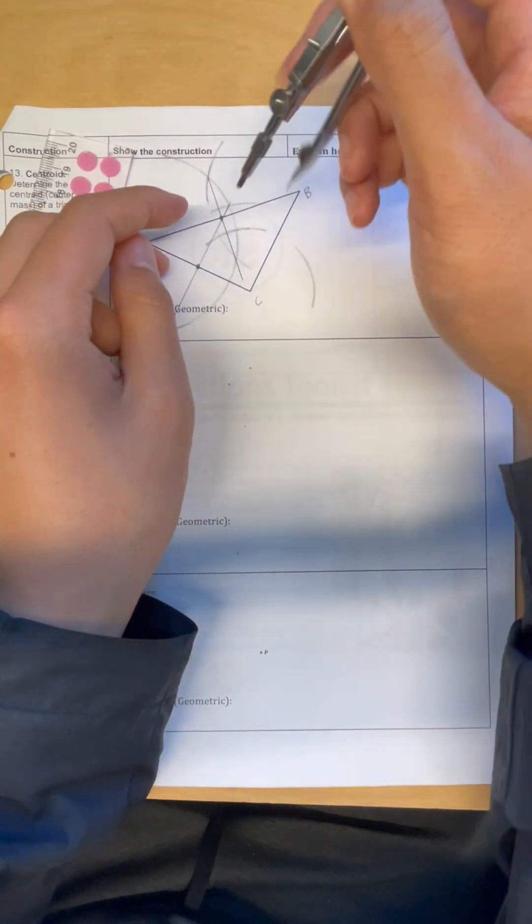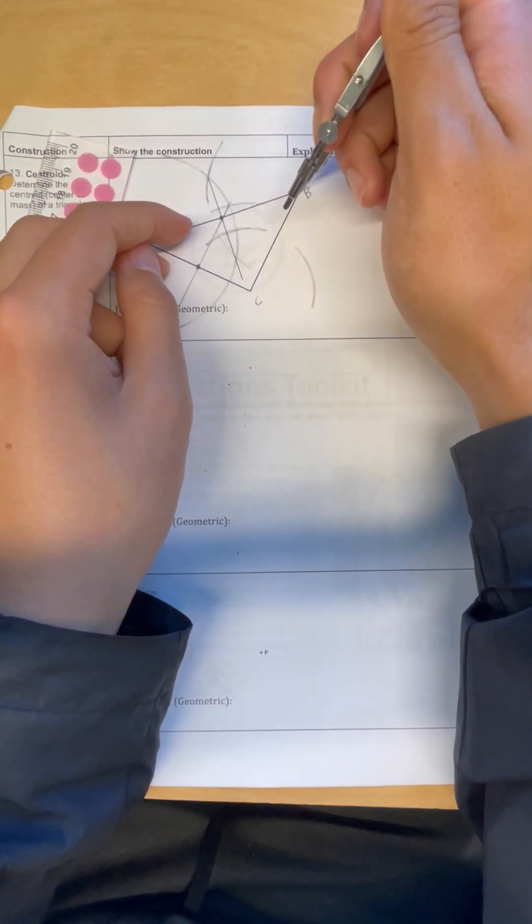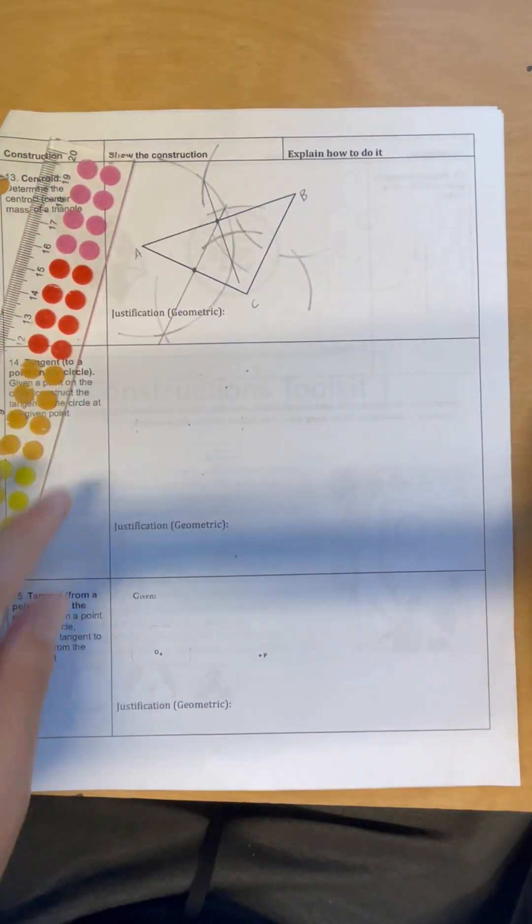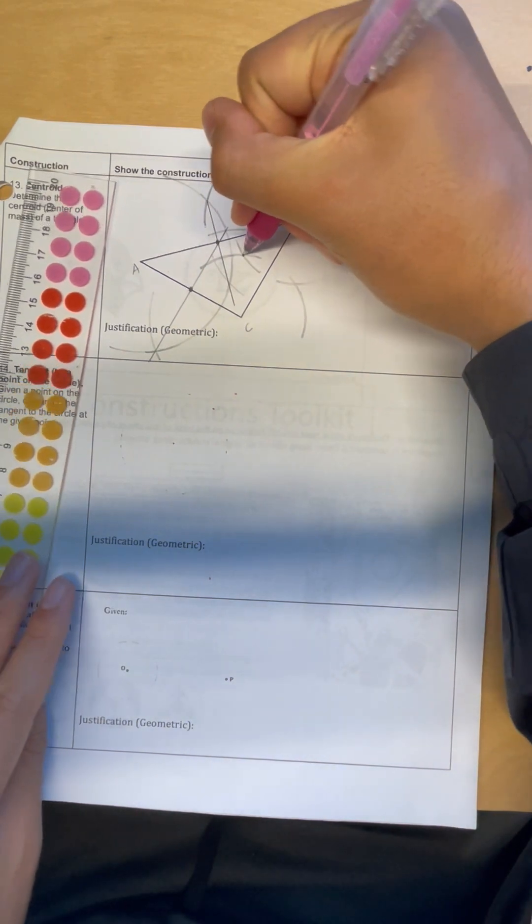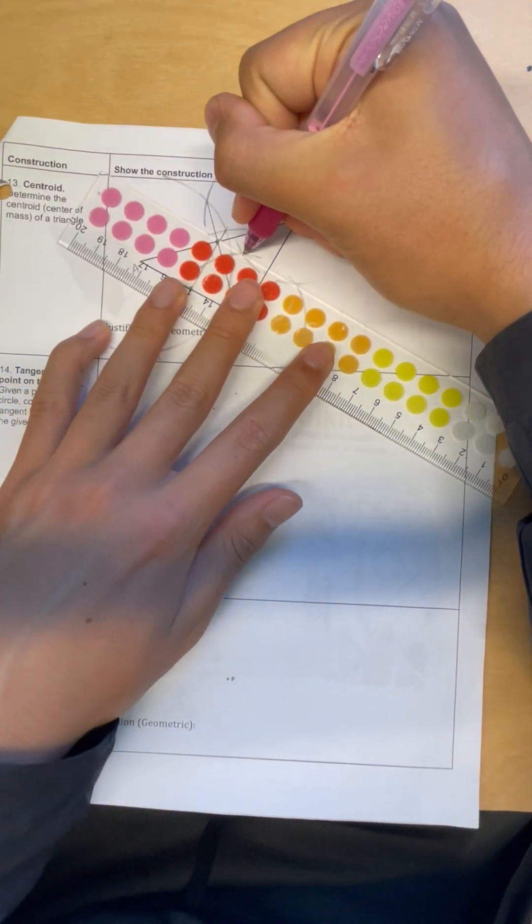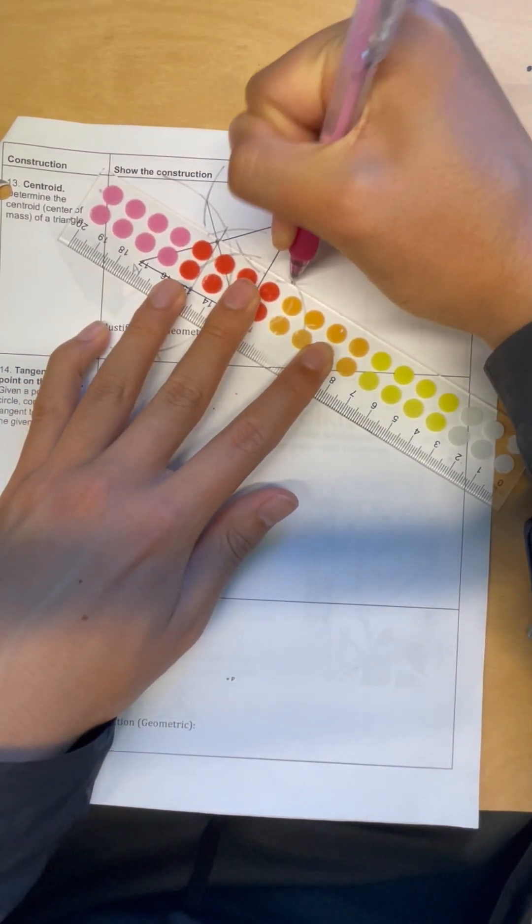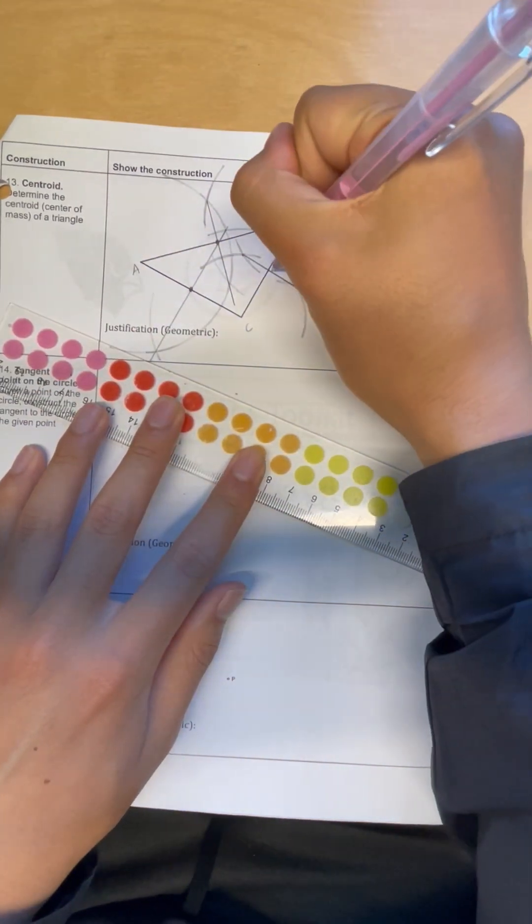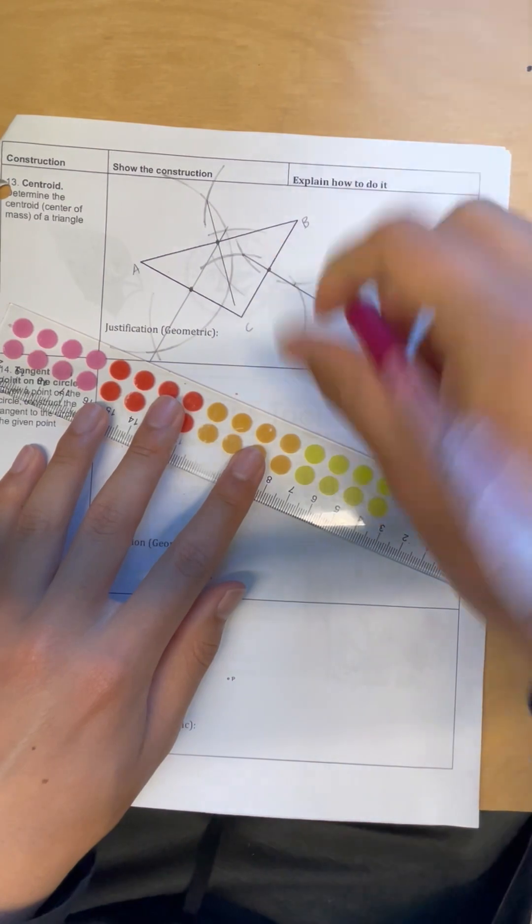And just be careful with your arcs, as they can get a little bit messy, and just keep track of which arc goes to which point. So we have the perpendicular bisector of BC here, and our midpoint for BC right there.